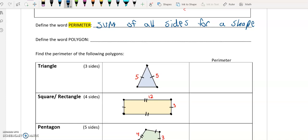We have another word that we'll be using today, which is polygon. And the definition of polygon is a shape with three or more sides.